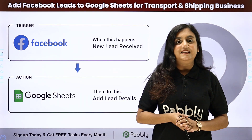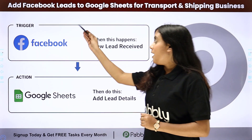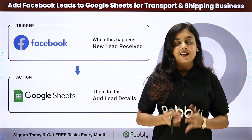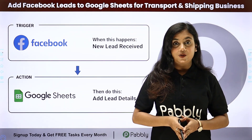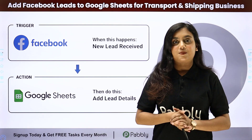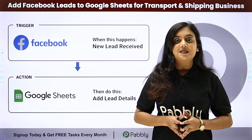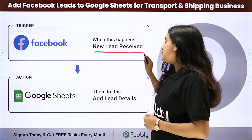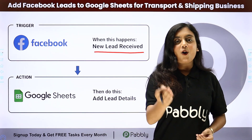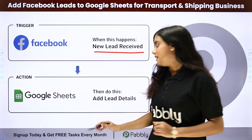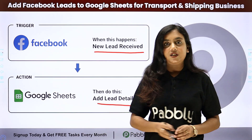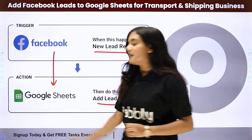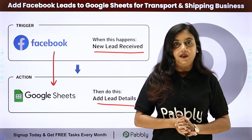Hello everyone, welcome back to Pabbly. In this video we're going to learn how to add Facebook leads to Google Sheets for a transport and shipping business. I am an owner of a transport and shipping business called Speed Wheels Express, and I'm promoting my business with Facebook lead ads. Whenever a new lead is generated, all the details should automatically be added into my Google Sheets. For that we need to create an automation between Facebook lead ads and Google Sheets with the help of Pabbly Connect.